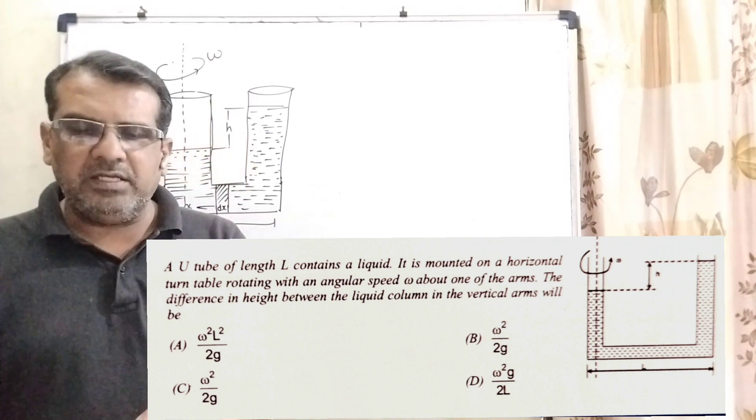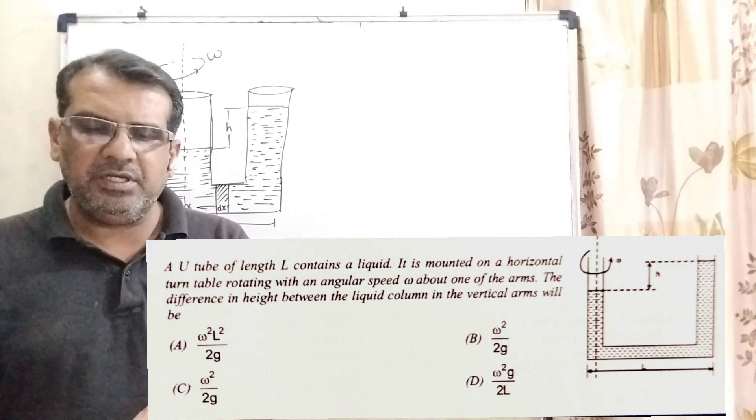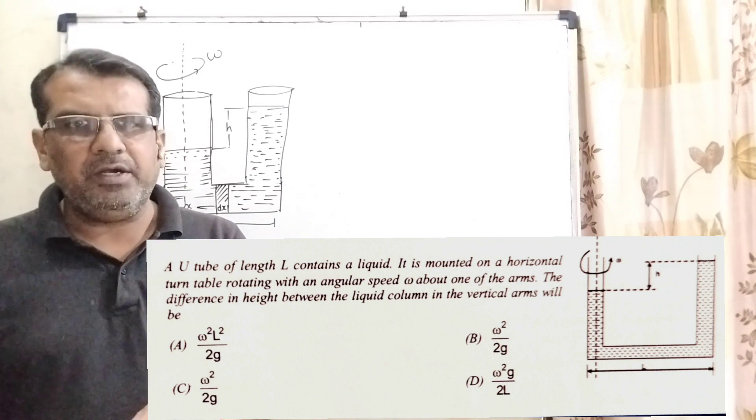Option A: omega square L square upon 2G. Option B: omega square L upon 2G. Option C: omega square L by 2G. And Option D: omega square G by 2L.